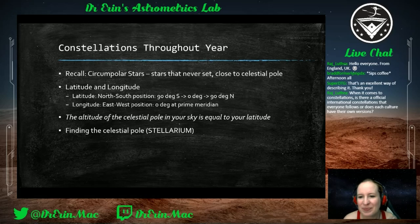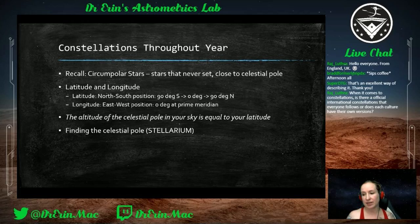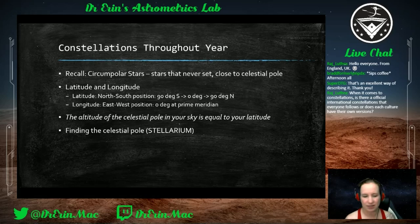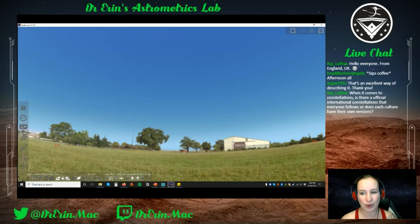As for official international constellations — each ancient culture, especially storytelling cultures, has their own stories associated with the constellations they see. However, the International Astronomical Union did designate 88 official regions of the sky, named after these various stories. Those are the officially designated constellations.